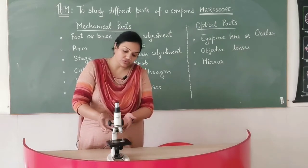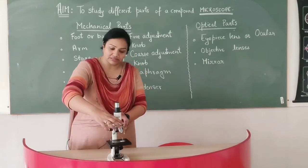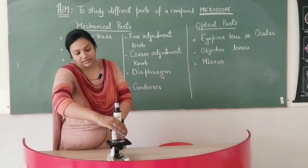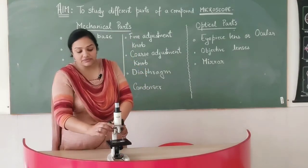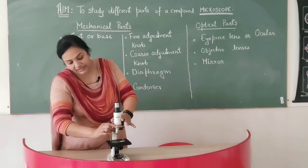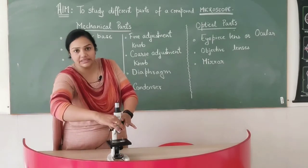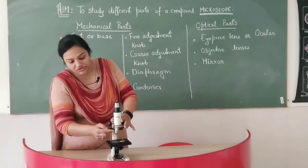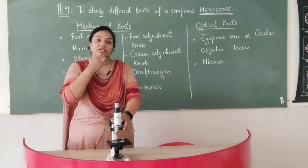Now coming to this part. This is called the nose piece, which is a rotatory disc. It can easily rotate. It is having three points where you can put three lenses.